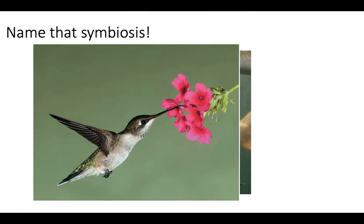Let's try another one. Okay, this is a hummingbird. In this case, the hummingbird is pollinating this flower, which is good for the flower — that's basically how plants reproduce and spread their seeds. The hummingbird is pollinating the flower, but in return, the hummingbird is getting nectar, which is food. That's positive for both. So that's going to be a mutualism.